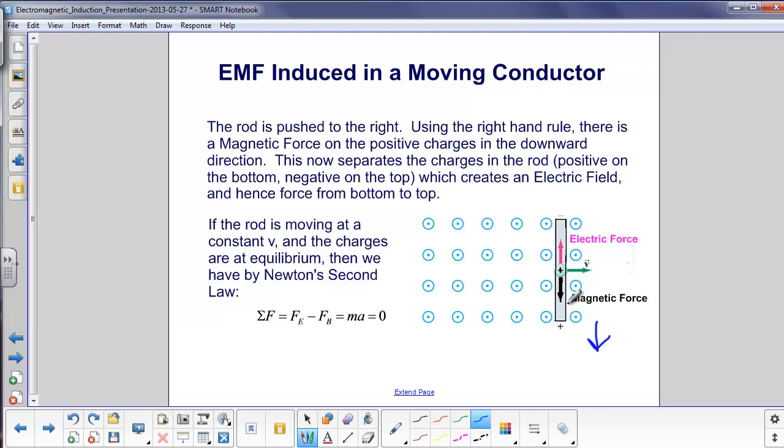So once that happens, the positive charges gather down here, which leaves negative charges up here, and now we have an electric field. We've separated charges, so we have an electric force in the positive y direction. Once the rod is moving at constant velocity and the charges are in equilibrium, they're spread as far apart as they can get, then we have, by Newton's law, the sum of these two forces will equal zero.